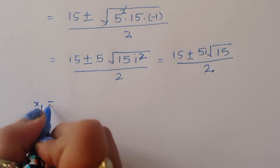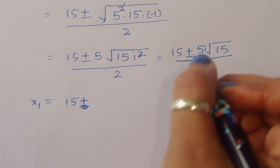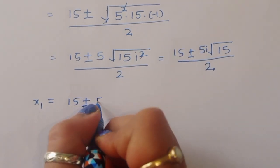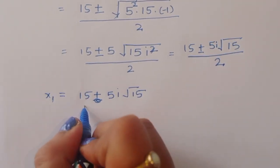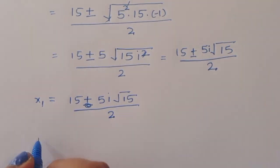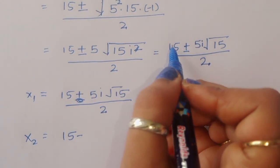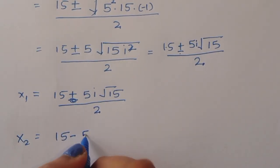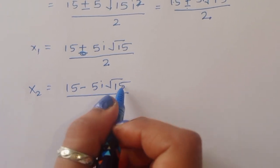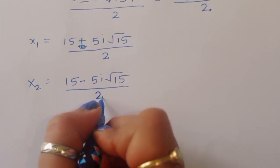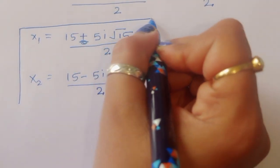We get two solutions: x1 equals (15 plus 5i square root of 15) divided by 2, and x2 equals (15 minus 5i square root of 15) divided by 2. Now we need to find the corresponding values of y1 and y2.